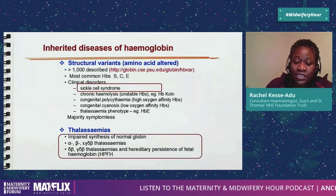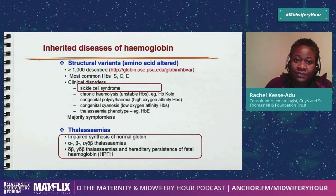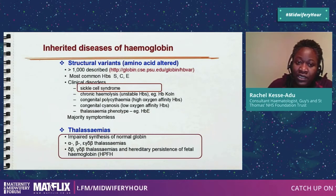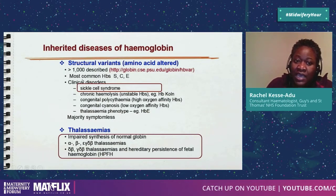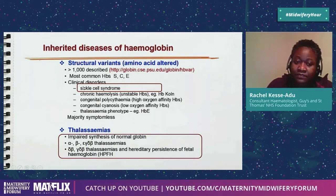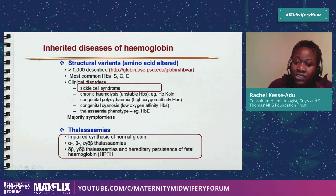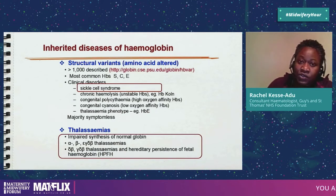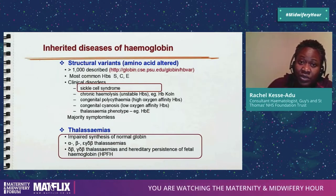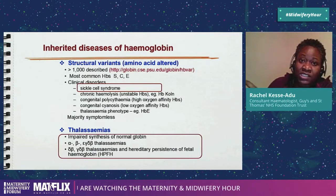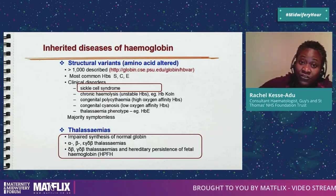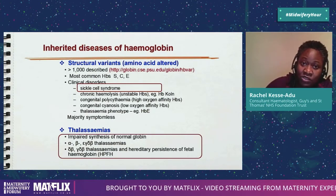We divide haemoglobinopathies into two simple categories. If the problem changes the shape or nature of the protein, it's a structural variant — the commonest being sickle cell. The thalassemias, however, are a quantitative problem: you're making an entirely normal protein, just not enough of it. Someone with alpha thalassemia isn't making enough alpha chains; someone with beta thalassemia isn't making enough beta chains. Whereas someone with sickle cell disease is making a structurally different protein — their haemoglobin is not the same as yours.